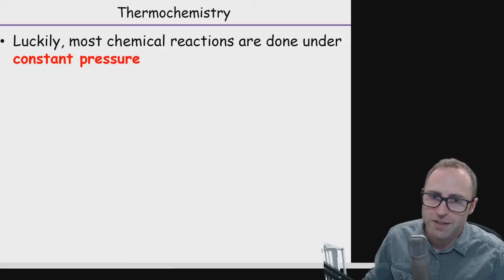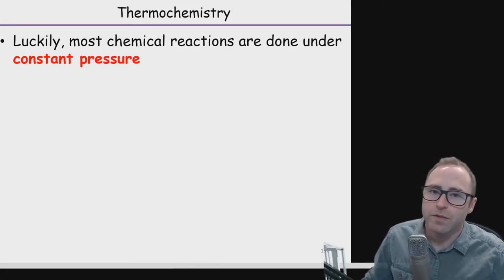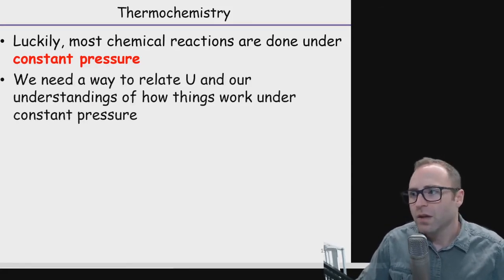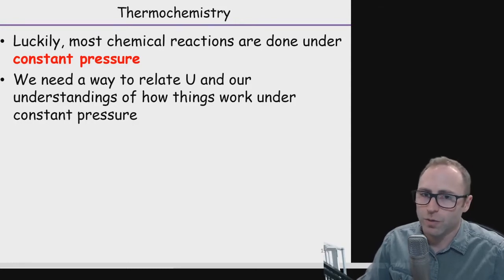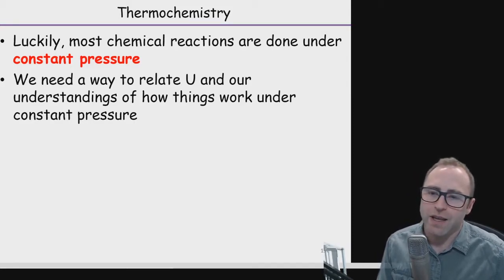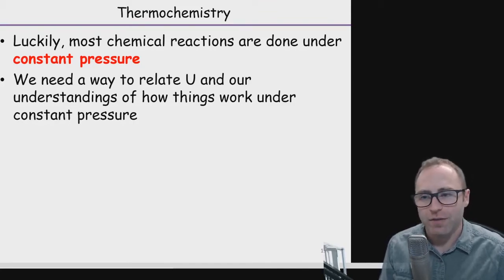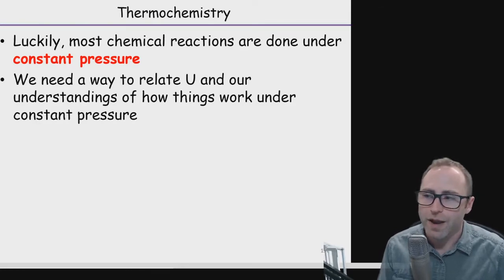We're going to talk about calorimetry in a little more detail in a minute. Right now, we're going to talk about the impact of doing most of our reactions under constant pressure. We've talked about the internal energy of a system, E or U, and ways of determining the change in E or U with respect to Q and W. What happens if we're going to do reactions under constant pressure — does that relationship change?